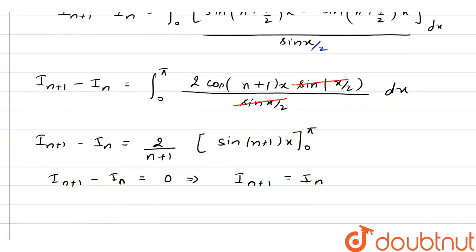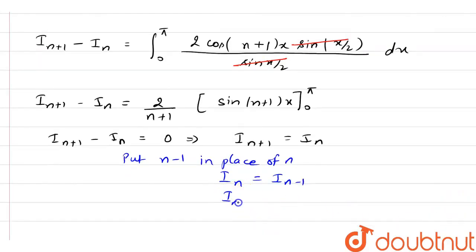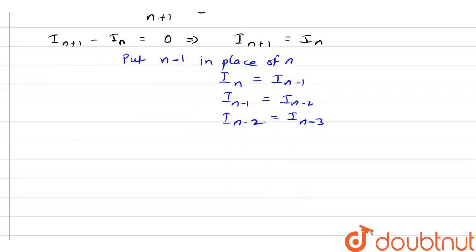If I put n minus 1 in place of n plus 1, n minus 1 in place of n, then we have I_n equals to I_{n-1}. In similar fashion, we can say I_{n-1} is equal to I_{n-2}. In similar fashion, I_{n-2} is equal to I_{n-3}. What we have observed? We have observed that I_{n+1} equals to I_n equals to I_{n-1} and so on equals to I_0.